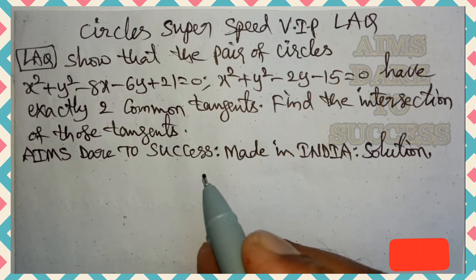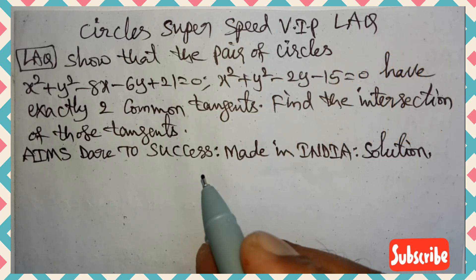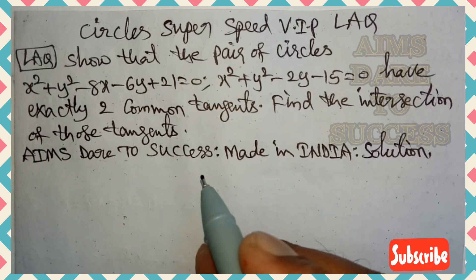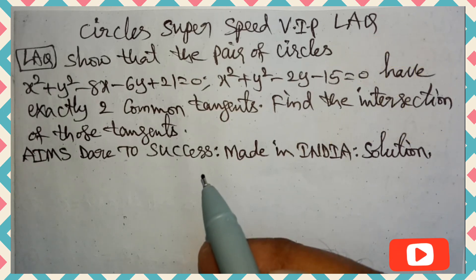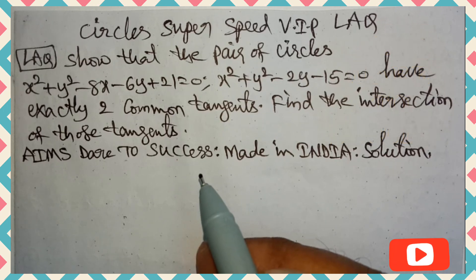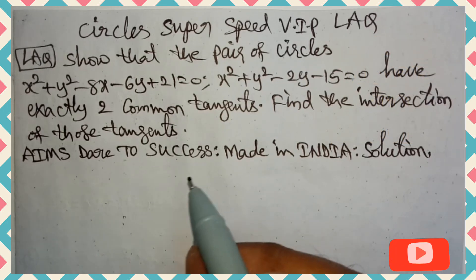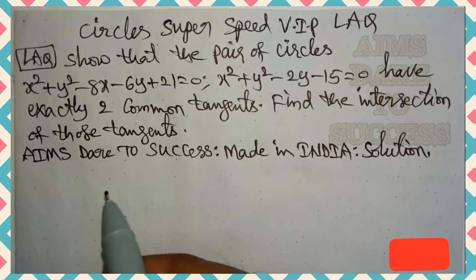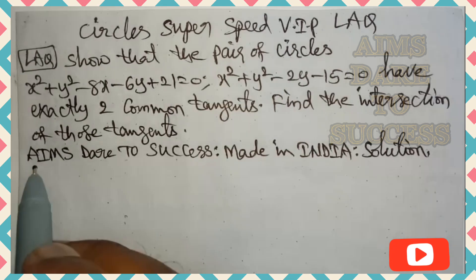Show that the pair of circles x² + y² − 8x − 6y + 21 = 0 and x² + y² − 2y − 15 = 0 have exactly two common tangents. Find the point of intersection of those two common tangents.